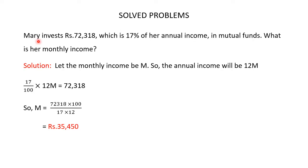Mary invests Rs.72,318, which is 17% of her annual income, in mutual funds. What is her monthly income? We have to find Mary's monthly income. So let the monthly income of Mary be M. Her annual income will then be 12M.